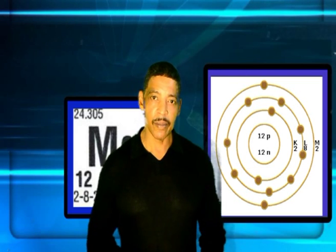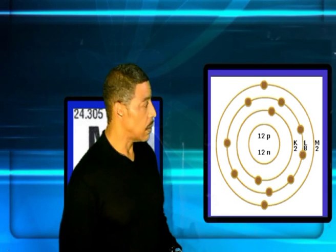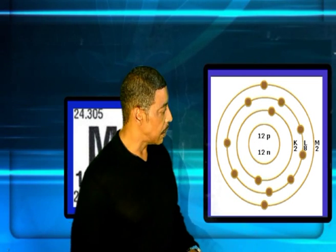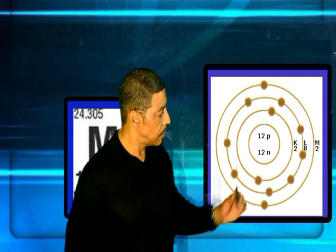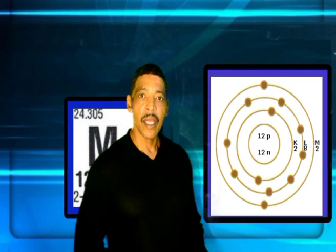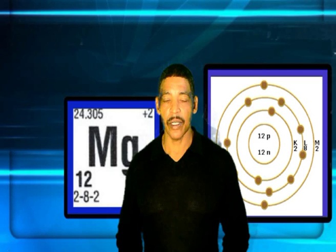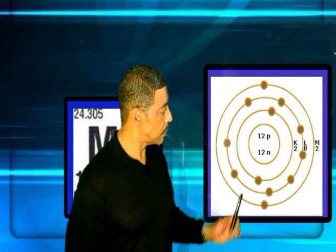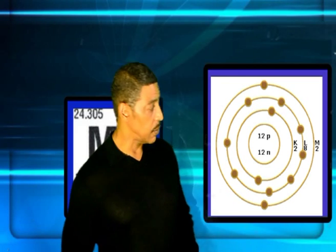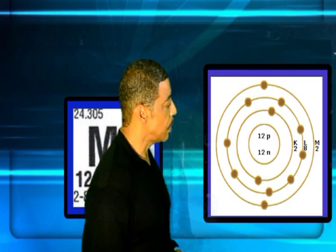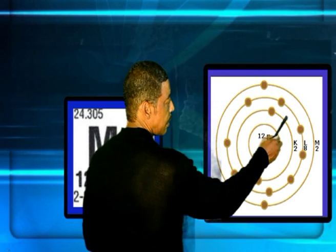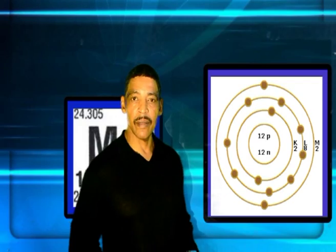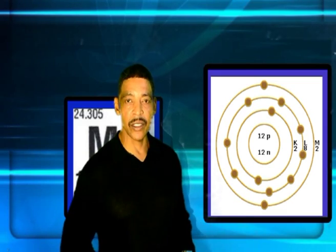Therefore, the Bohr model of magnesium will consist of a nucleus and three electron shells, where in the nucleus we find 12 protons. Rounding the average mass of 24.305 to 24 and subtracting 12 yields 12 neutrons. The electron configuration is 2-8-2, where two electrons are found on the K shell, eight electrons on the L shell, and two electrons on the M shell, which represents the valence shell.